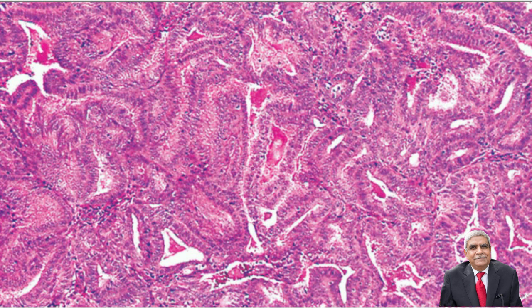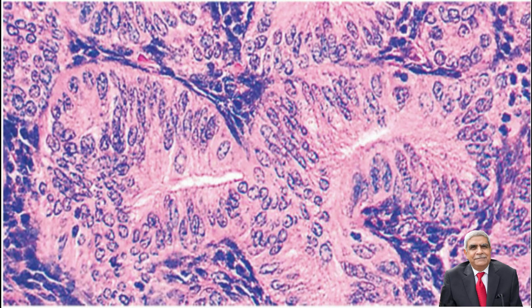The final photograph shows complex hyperplasia where the glands are lying back to back against each other with very little stroma in between them, and there is presence of atypia.